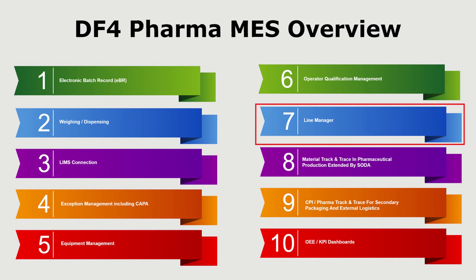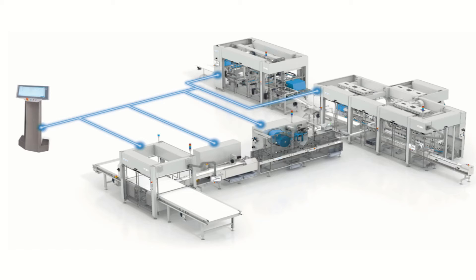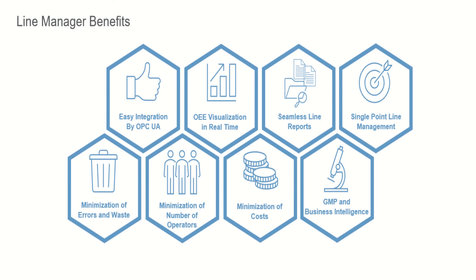DF4 Pharma MES is designed to connect with various machine control systems and equipment, allowing it to send batch-related order data to these systems and collect data from them. By connecting all machine control systems to DF4 Pharma MES, the system can provide a centralized view of the entire production process from raw material inputs to finished product outputs. This allows line managers to monitor and control the production process in real time, identify issues or bottlenecks, and make adjustments as needed to ensure efficient and effective production.